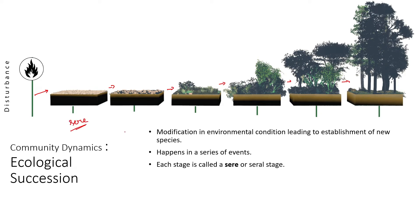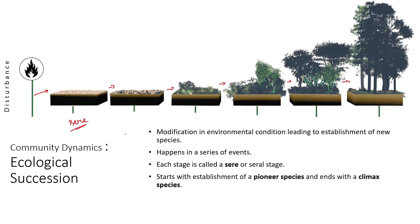Succession starts with the establishment of pioneer species. The first species is usually called the pioneer species, and the last species is usually called the climax species.